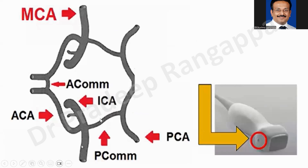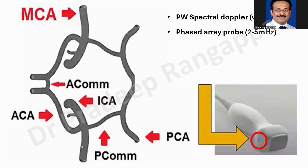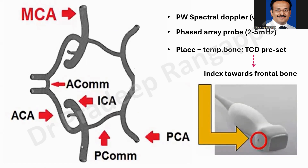MCA is the easiest vessel you will see immediately, followed by ACA and then PCA. These are the three main ones to keep in mind. We use a phased array probe at 2 to 5 megahertz, looking at pulse wave spectral Doppler velocity. The site where we place the TCD probe is the temporal bone, and we use a TCD preset.